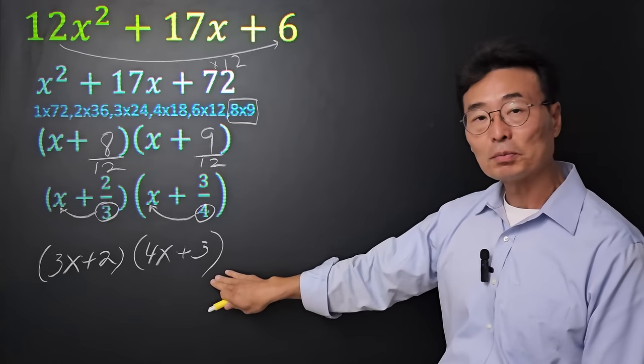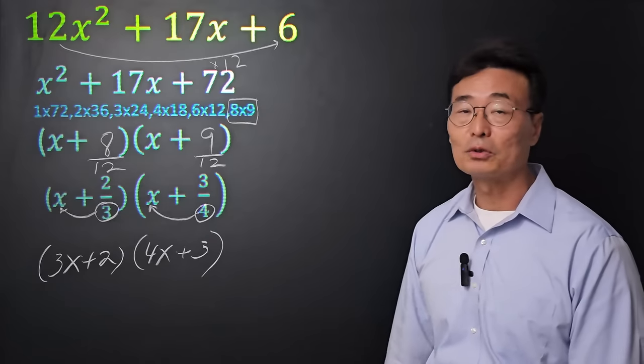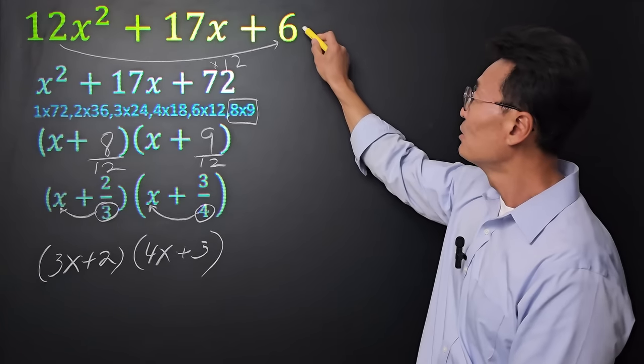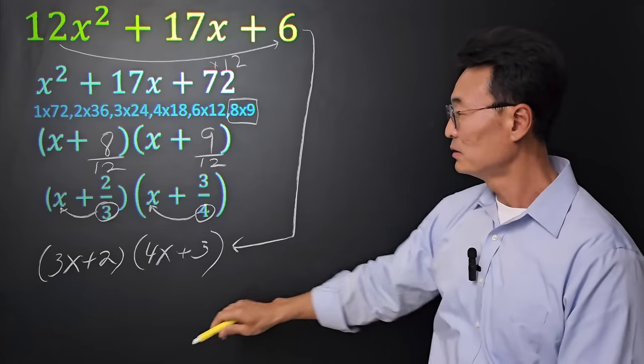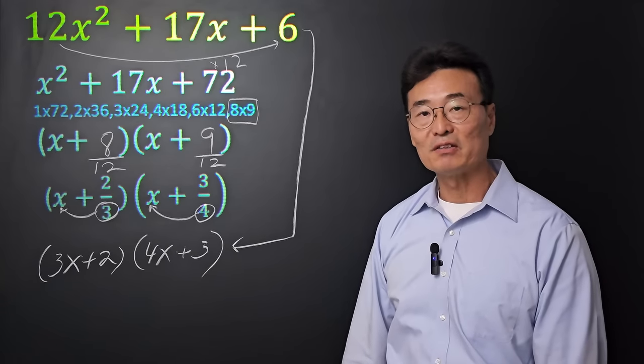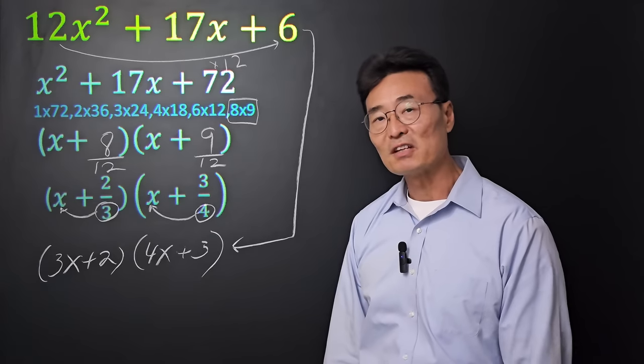And, of course, if you multiply this out, you'll get 12x squared plus 17x plus 6. Or, factoring the original expression, that will be our final answer. Let me do another example.